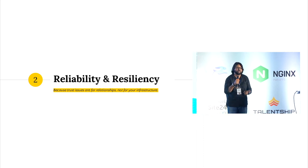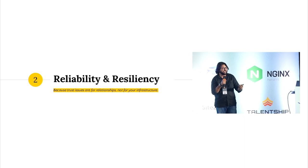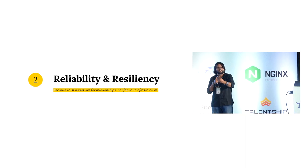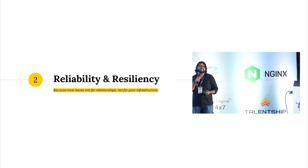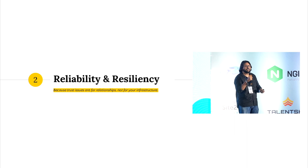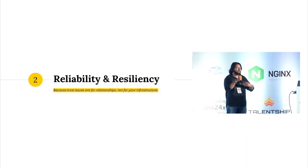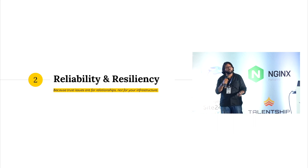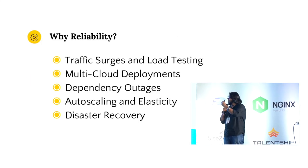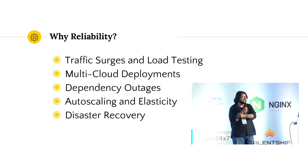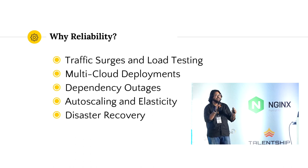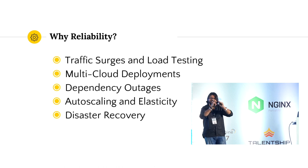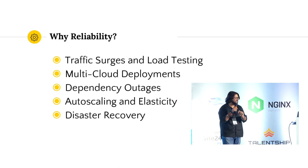Reliability is how your system behaves — for example, one plus one always equals two. Resiliency is how fast your system can come back from a disaster. If something goes wrong and your system experiences downtime, how quickly can it return to its previous state?